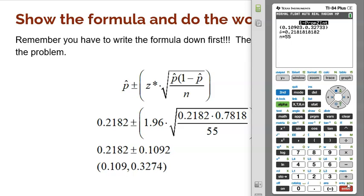And that's it. There's your interval: 10.9% to 32.7%. You might notice it's slightly different than when we do it by hand, but that's because the calculator doesn't do any rounding.